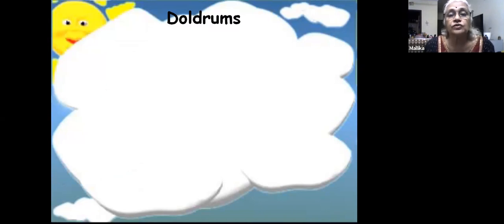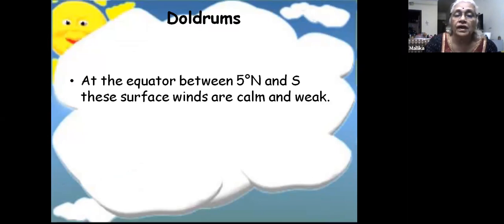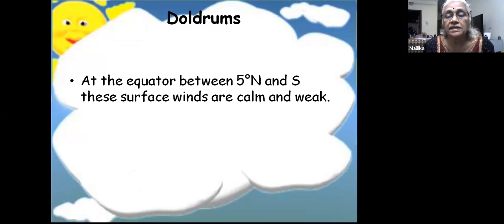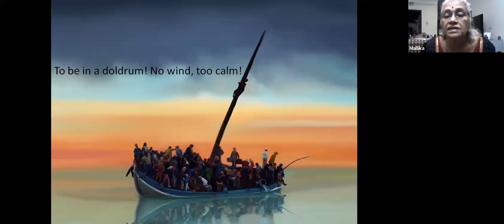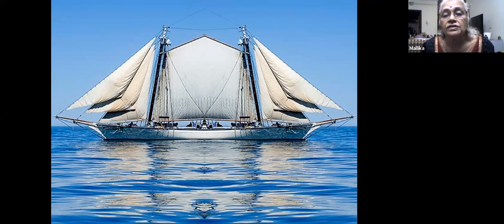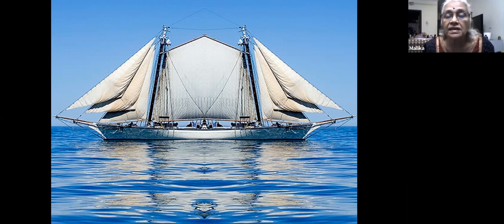The equatorial region is called the doldrums, located between 5 degrees north and south. Winds here are not strong - it's mostly calm with very weak winds. The term 'doldrum' comes from what happened to sailing boats at sea. A sailing vessel here would have its sails open but the ship would not move at all because there was no wind.